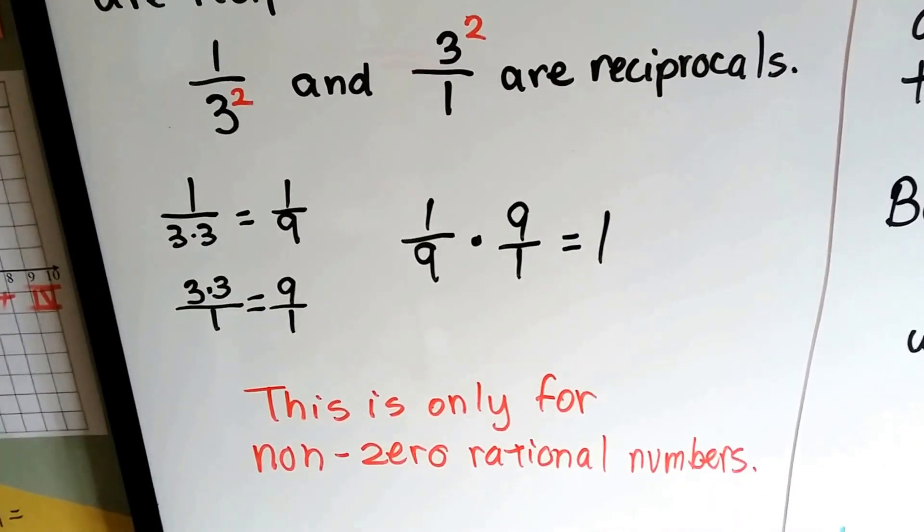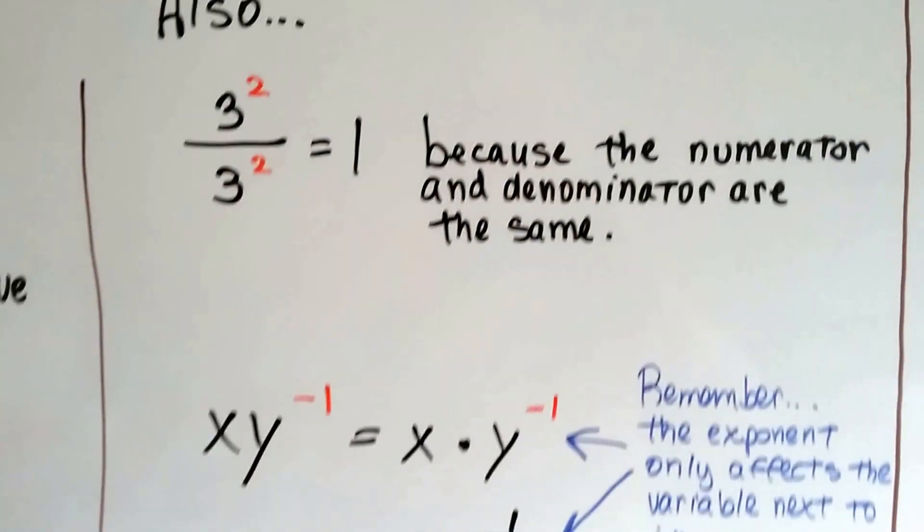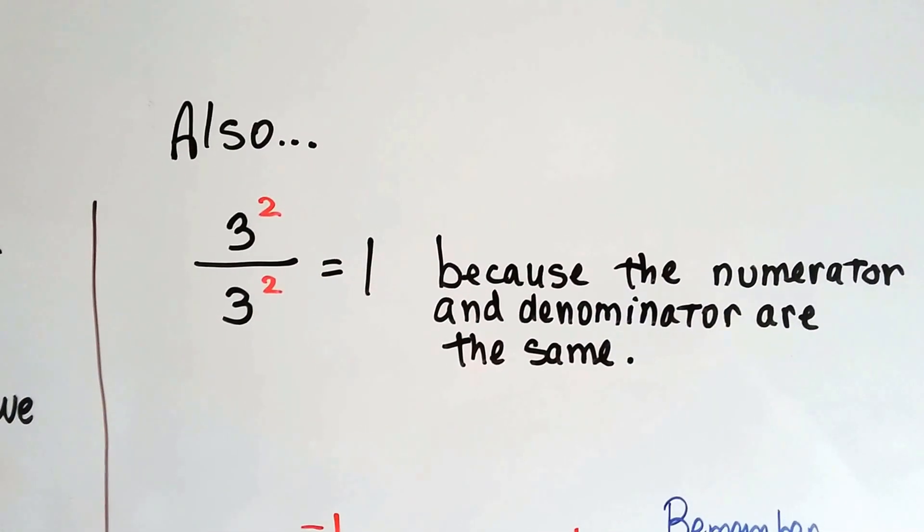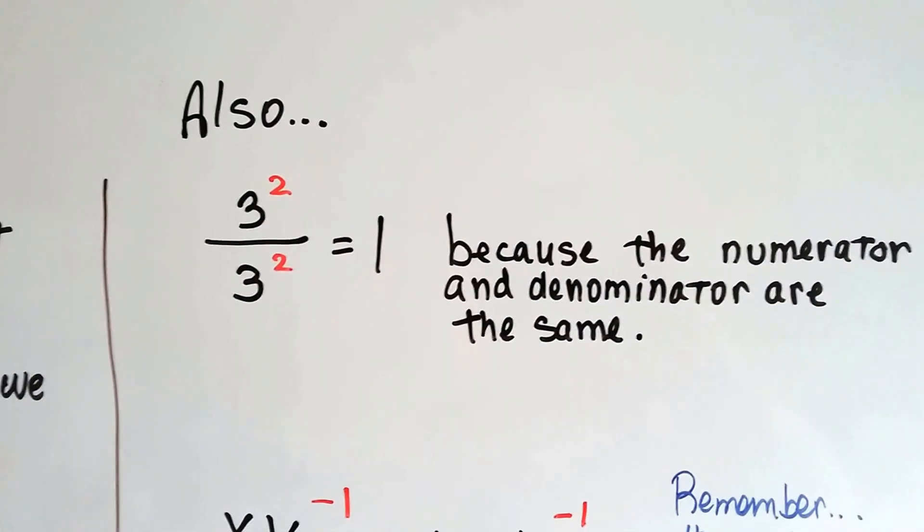This is only for non-zero rational numbers. So, if we've also got 3 to the second power over 3 to the second power, because the numerator and denominator are the same, they're going to equal 1, won't they?